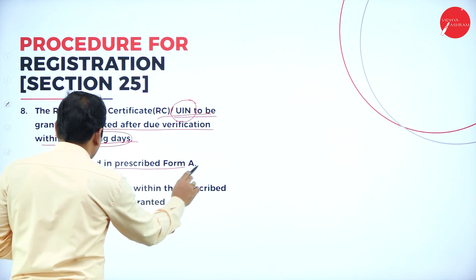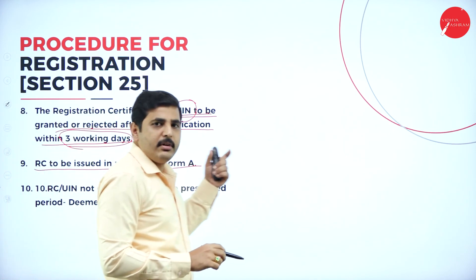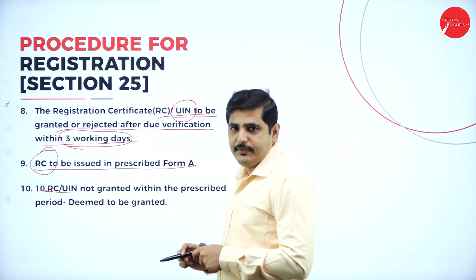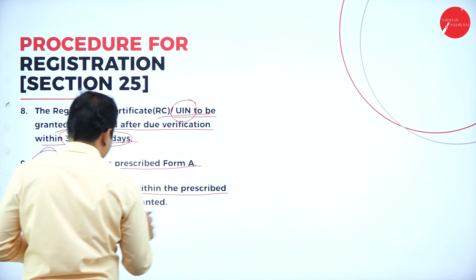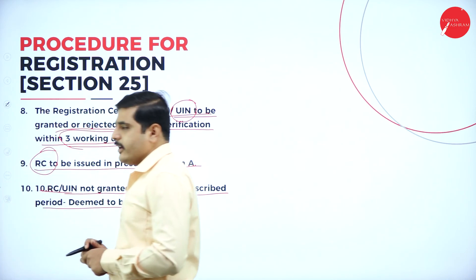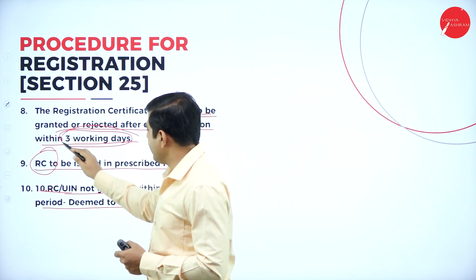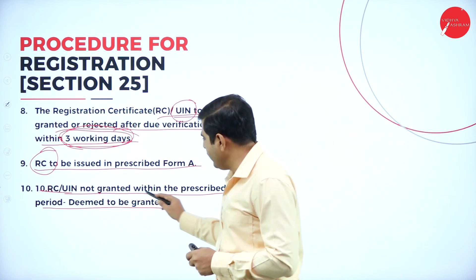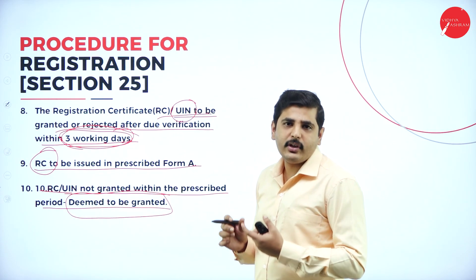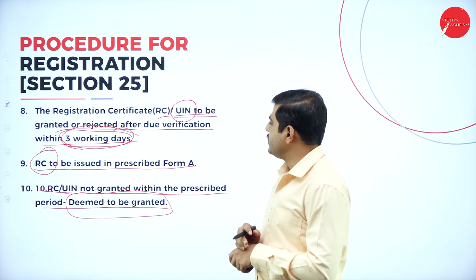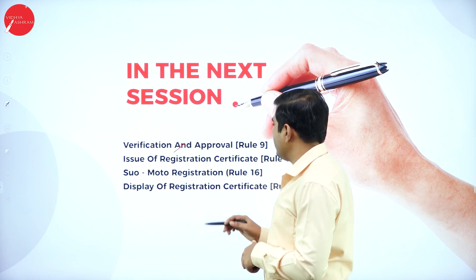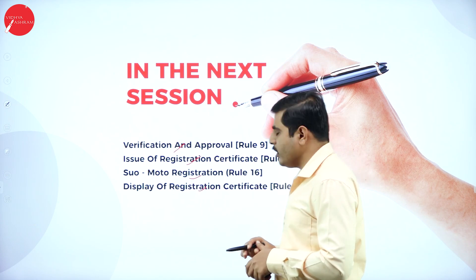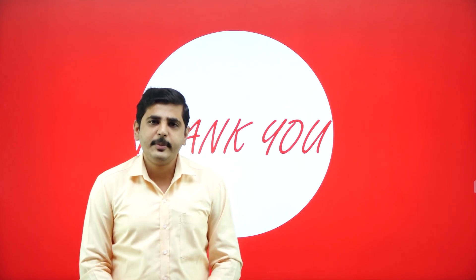The registration certificate will be issued in a prescribed form. If the registration certificate or unique identity number is not generated within the prescribed period of three working days, it is deemed to be granted - meaning it is assumed to be generated and you can consider yourself as registered and conduct business. In the next session we will discuss verification and approval, issue of registration certificate, suo moto registration, and display of registration certificate under Rule 18. Thank you so much - see you in the next session.